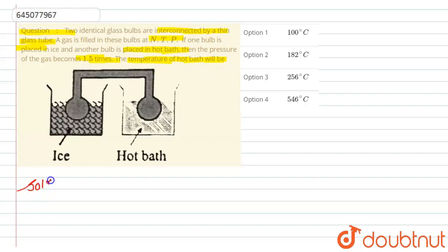So in this question we can see here we have given the diagram. We have two identical bulbs which are connected by this thin glass, and in these two bulbs a gas is filled at NTP. Now if one bulb is kept in ice and another bulb is kept in hot bath, then what will be the temperature for the hot bath that you have to find here.